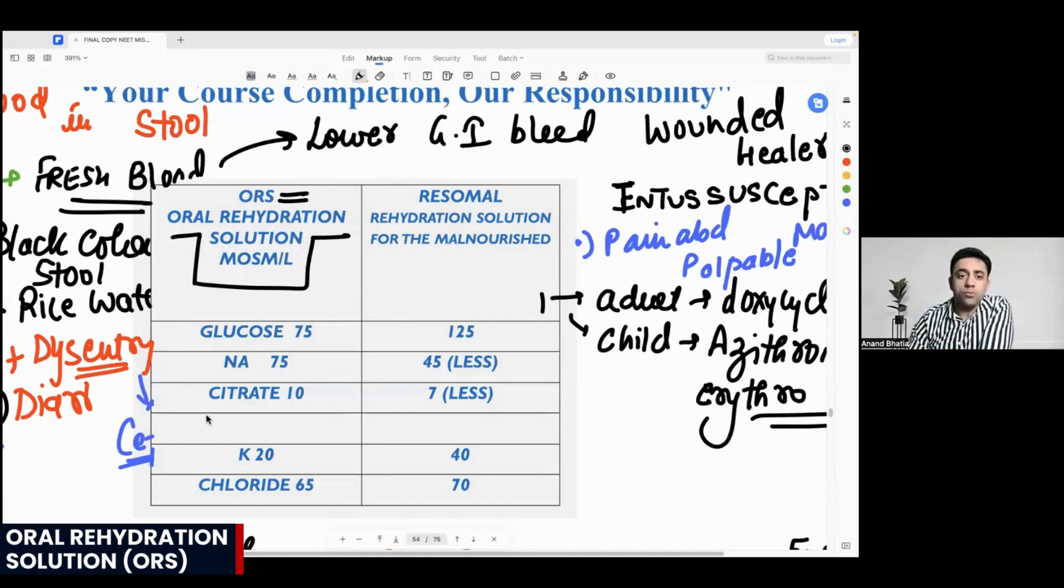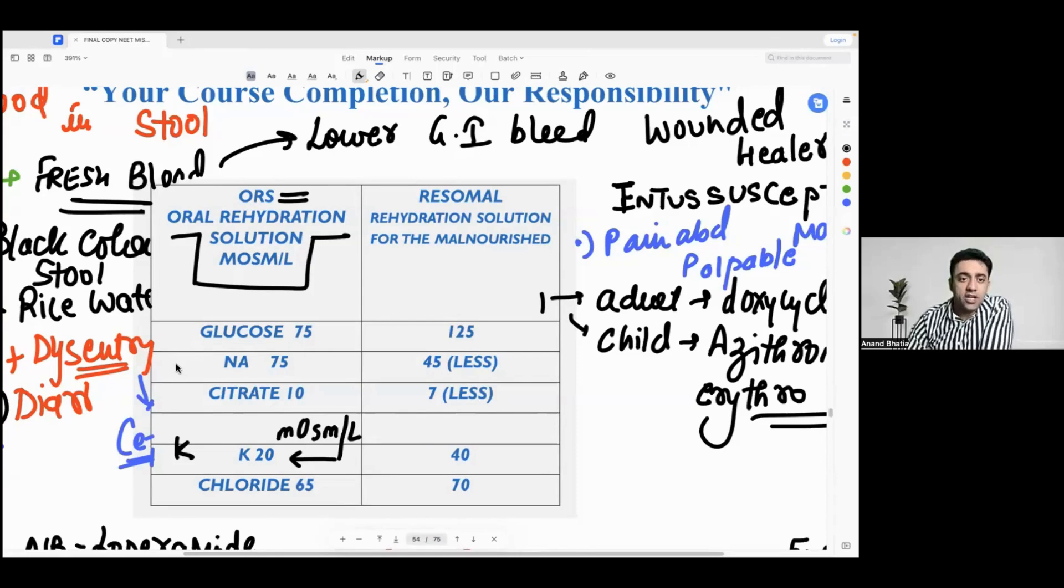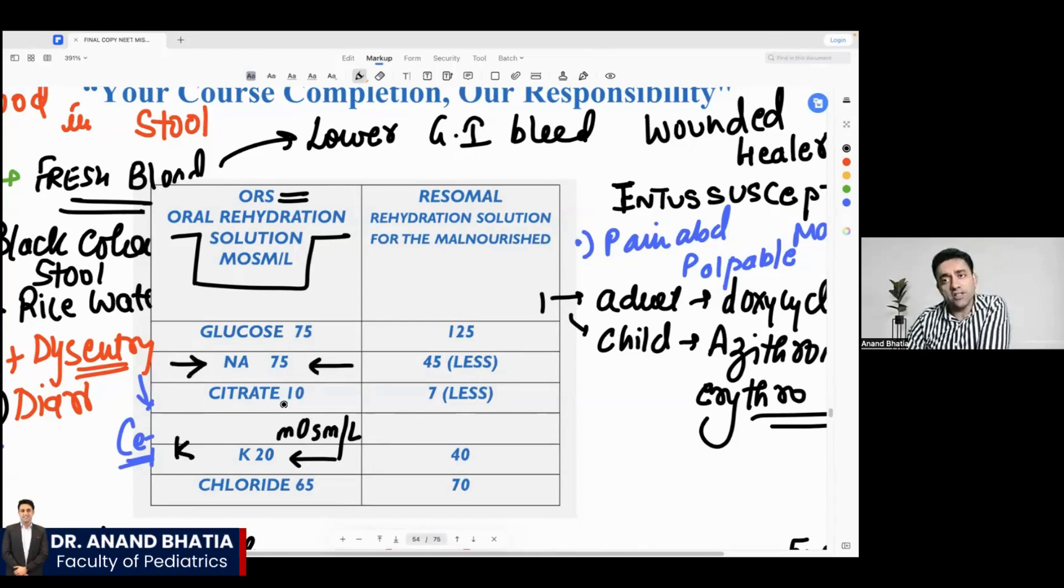They ask in exam how much is potassium in ORS. Potassium is 20 milliosmoles per liter in ORS. So sodium is 75. Do we have something else which is 75 in a case of ORS? Yes, we have glucose. Glucose is also 75. That is very important.